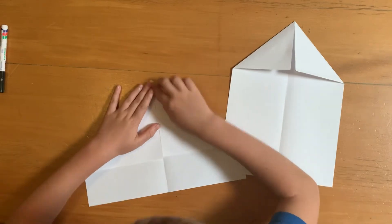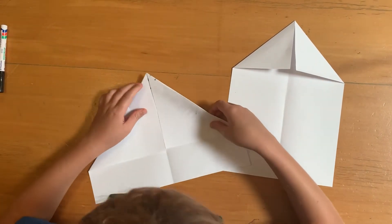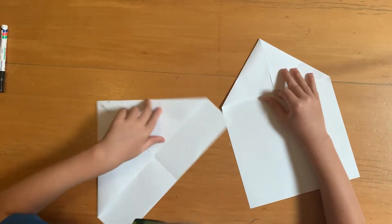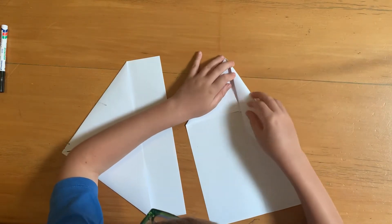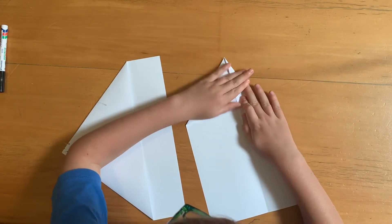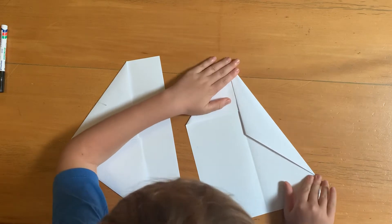That was a little bit uneven, that was my fault. Okay, now we're going to leave this for a second and we're going to fold the next step to make a normal paper airplane on both sides.